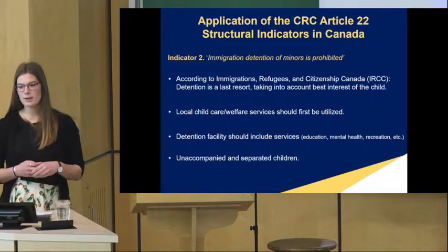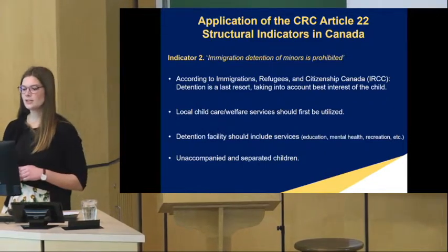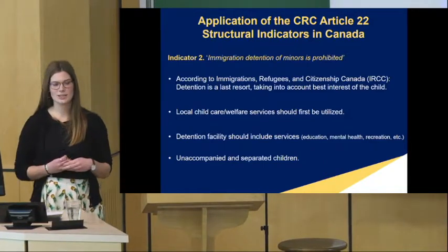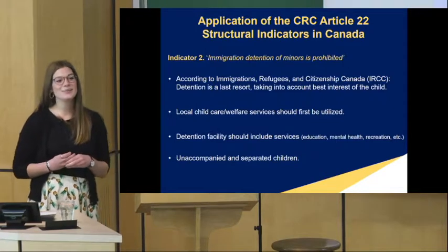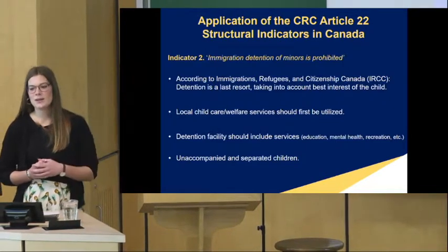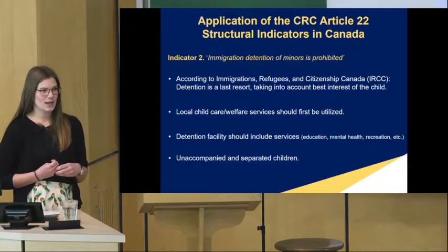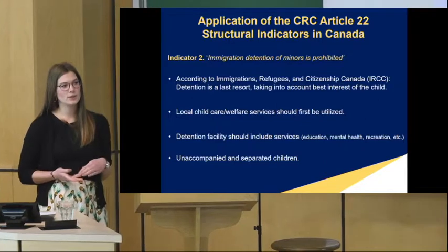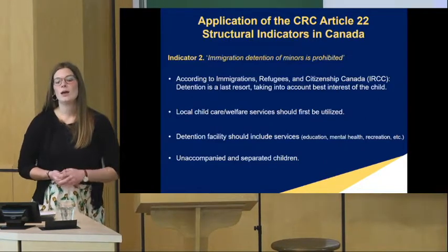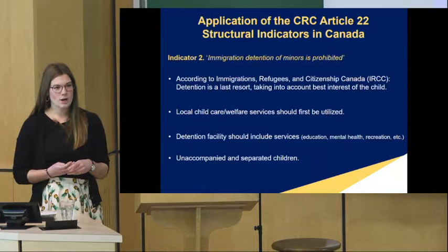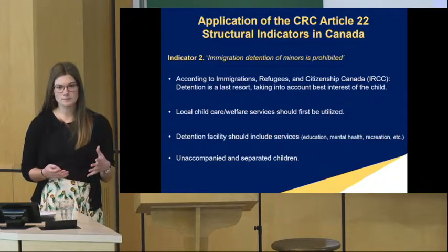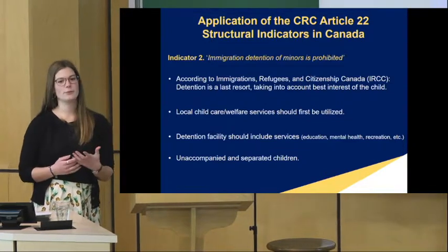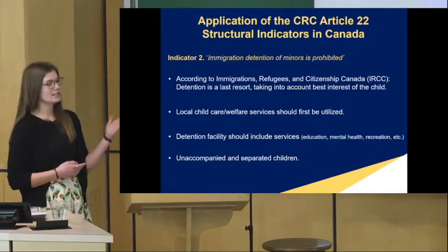For example, Global Child Indicator 2 states that immigration detention of minors is prohibited. According to Immigration, Refugee, and Citizenship Canada, detention is only used as a last resort. Local child care and welfare services should first be utilized, and if the child is to be detained, other child rights such as education, health, and recreation should be upheld. Unaccompanied and separated children are also not to be detained due to the fact they are alone. Although there are policies and regulations in place, Canada does fall short of meeting this indicator.